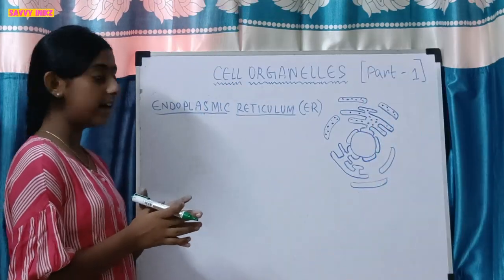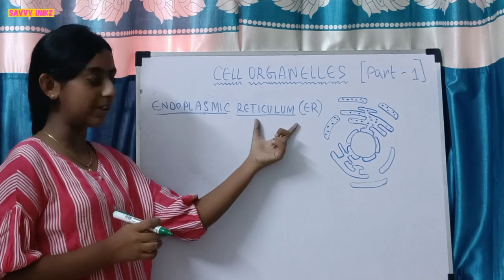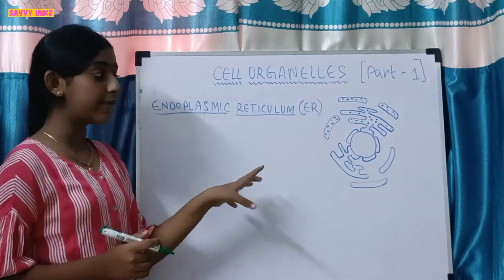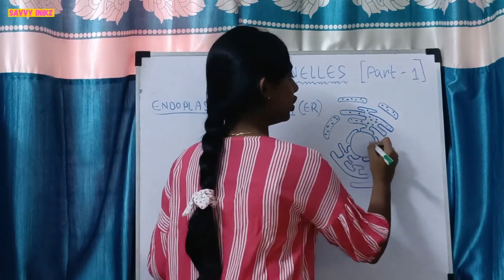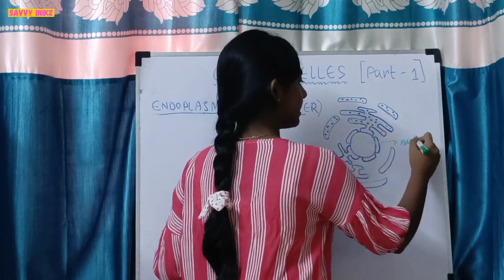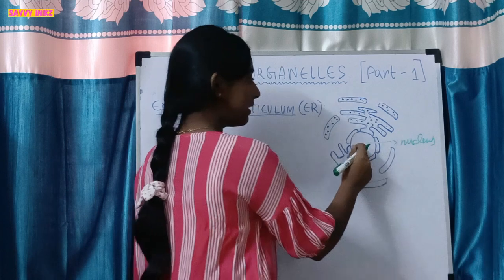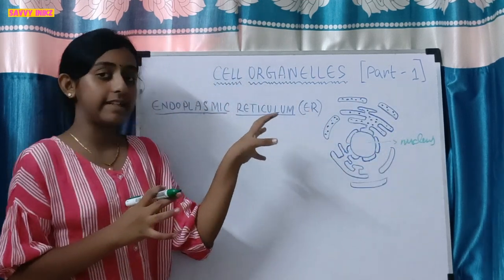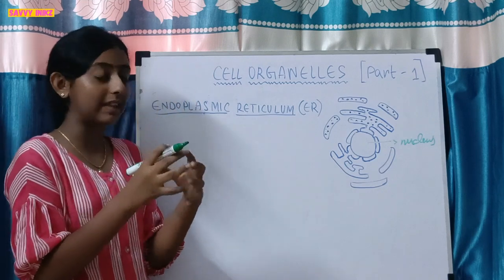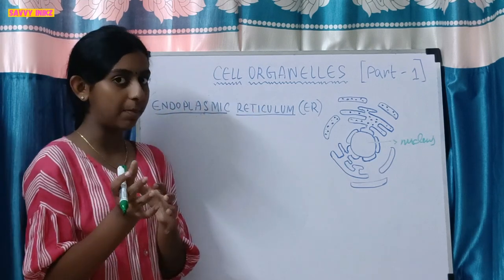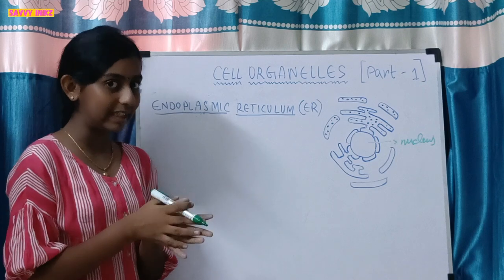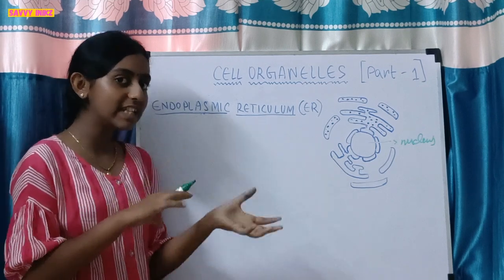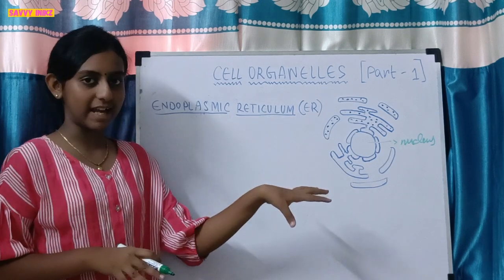The first cell organelle we're going to learn is the endoplasmic reticulum, or ER. This endoplasmic reticulum is connected to the nucleus — this ball-like structure is the nucleus and these are the endoplasmic reticulum. It acts as a connection between the nucleus and the cytoplasm for transporting materials, and it also transports materials to various parts of the cytoplasm.